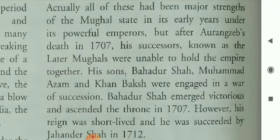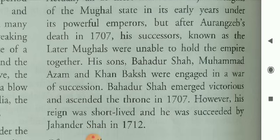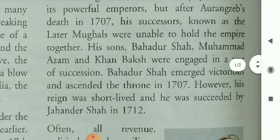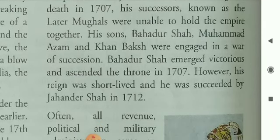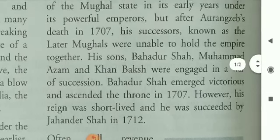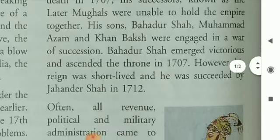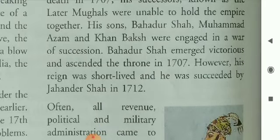All of these had been major strengths of the Mughal state in its early ascendancy — its powerful emperor. But after Aurangzeb's death in 1707, his successors, known as the later Mughals, were unable to hold the empire together. The successors of Aurangzeb could not maintain the strength of the Mughal dynasty and they are also known as the later Mughals, who were not able to maintain the strength of the empire.